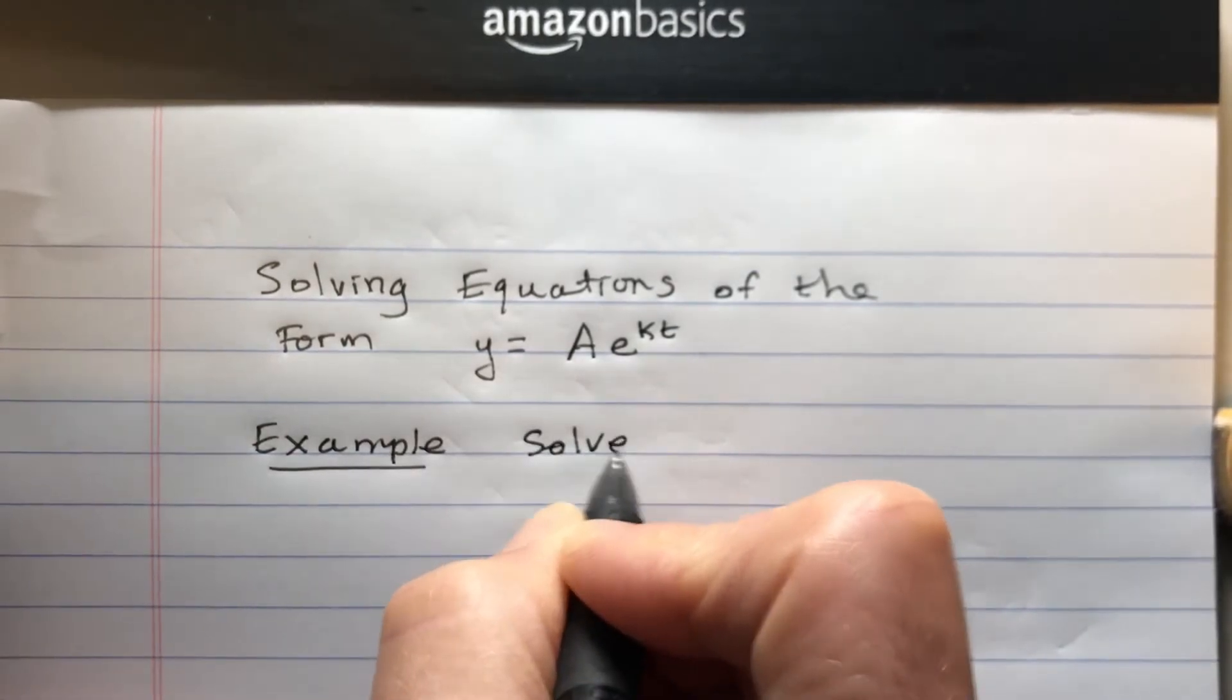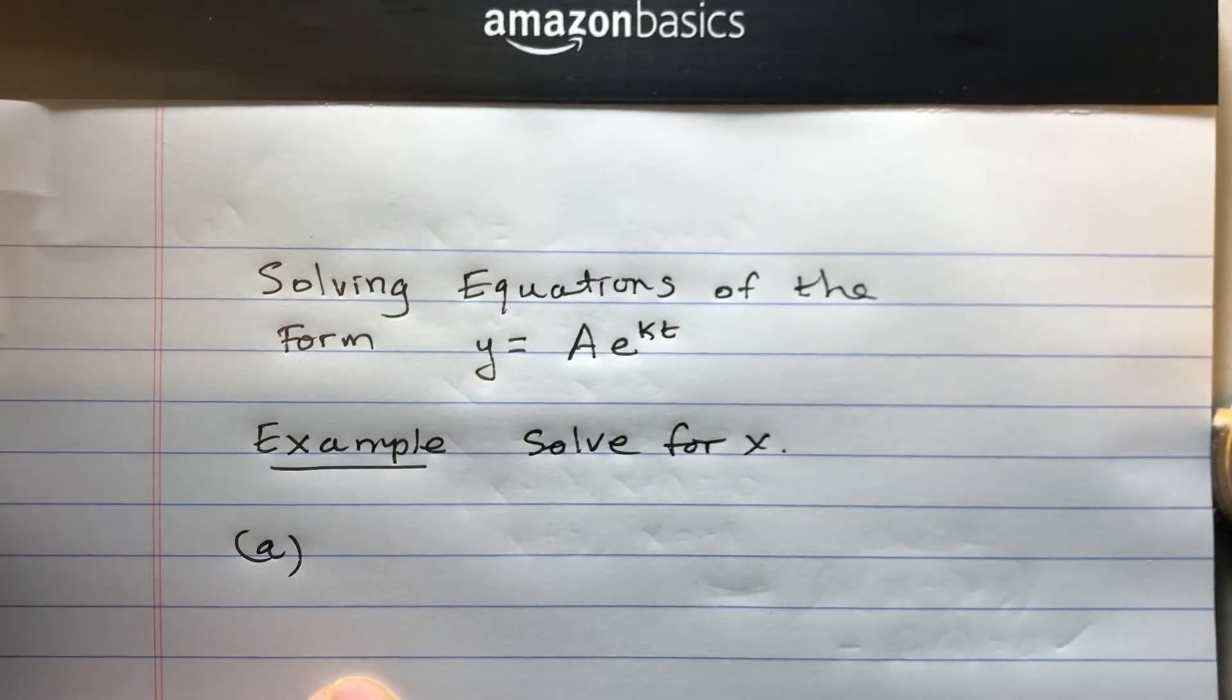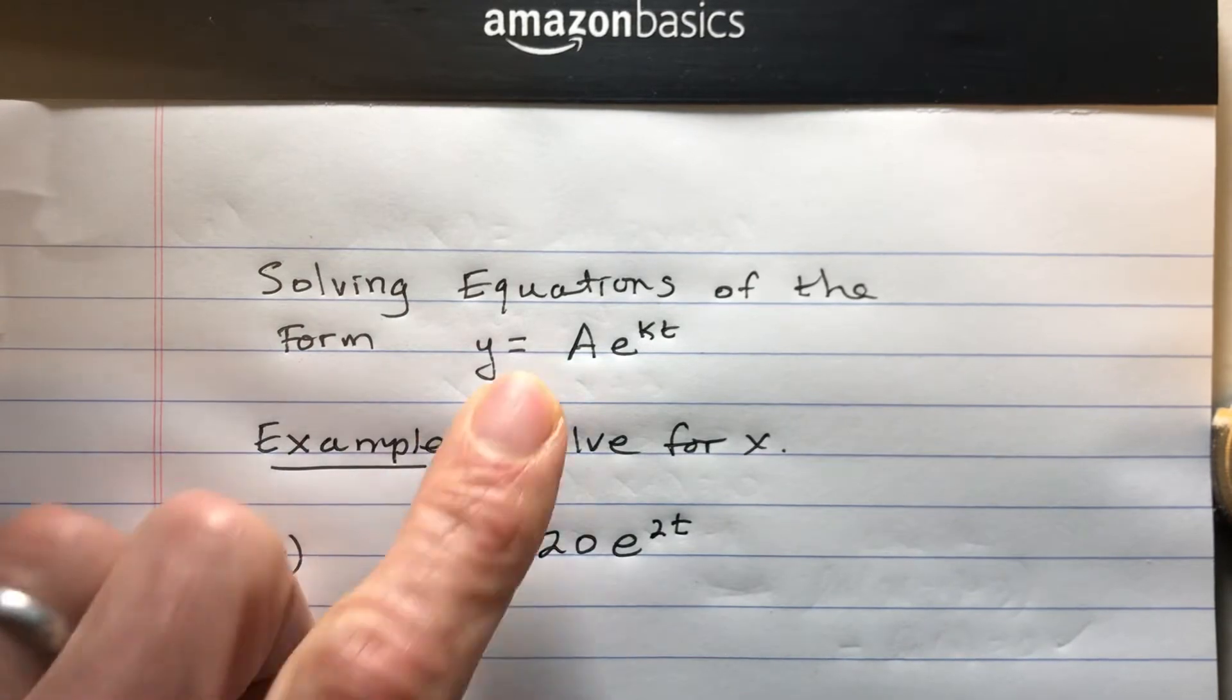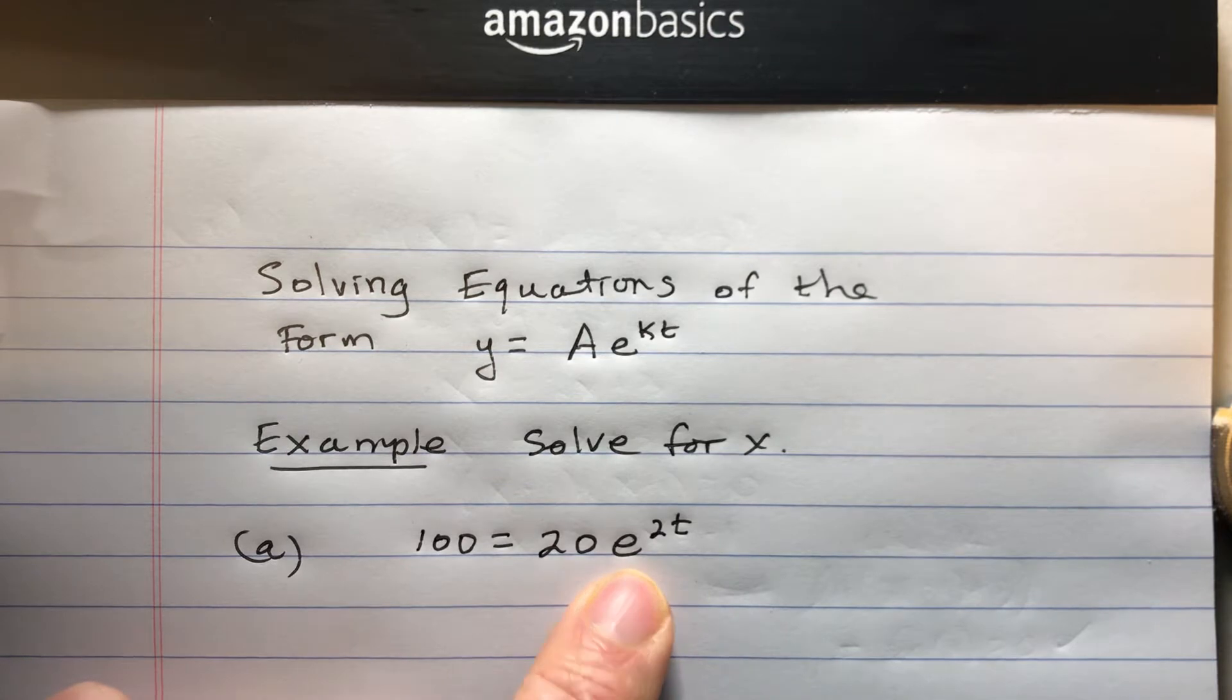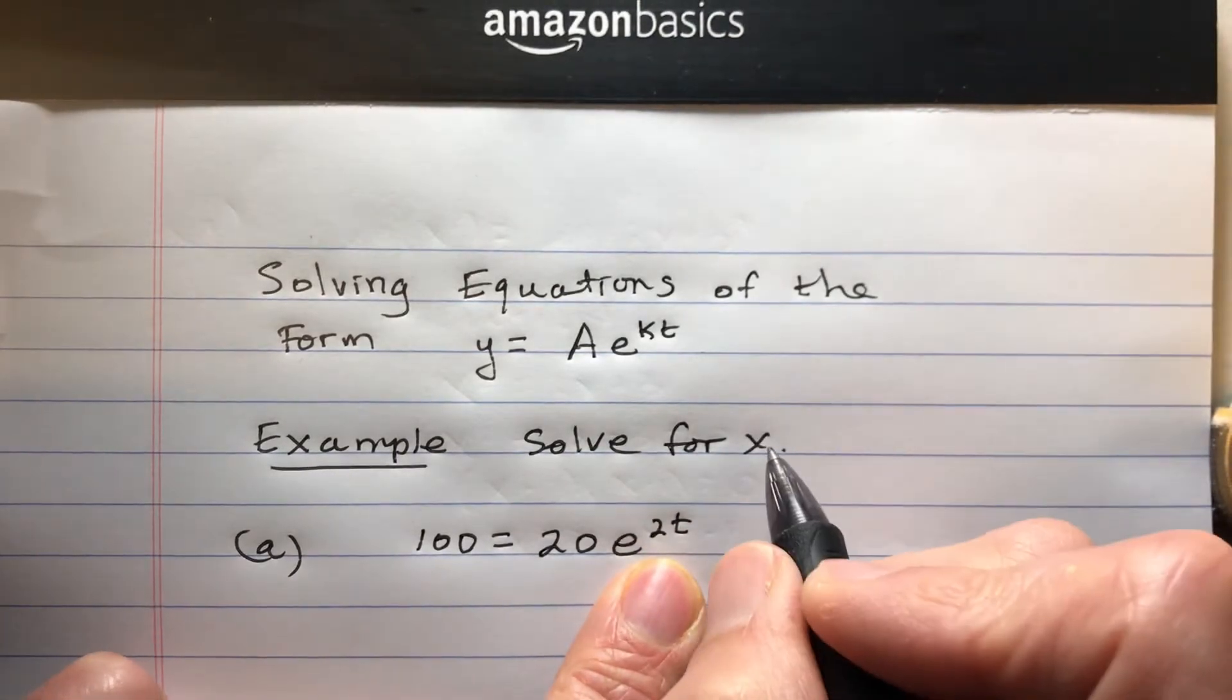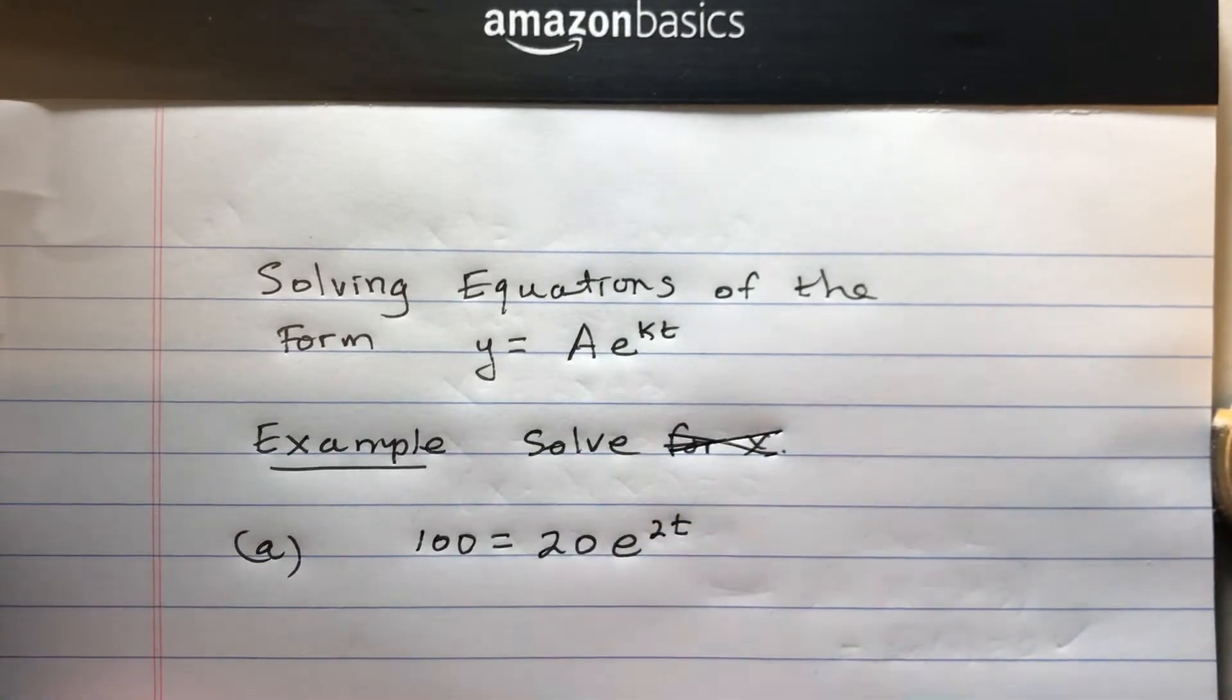So solve for x. Here we have 100 equals 20e to the 2t power. So it's actually this form, but let's not get too caught up on this. I have an exponential equation that has e as the base, and I have everything else as numbers, and my unknown is t. I should just say solve instead of solve for x because it says t as the variable.